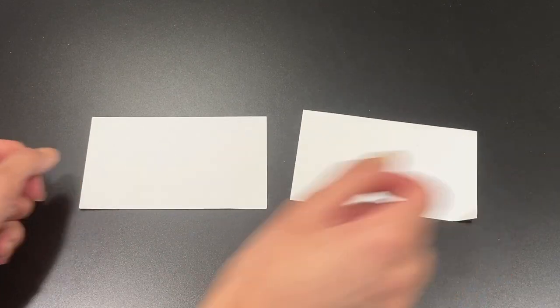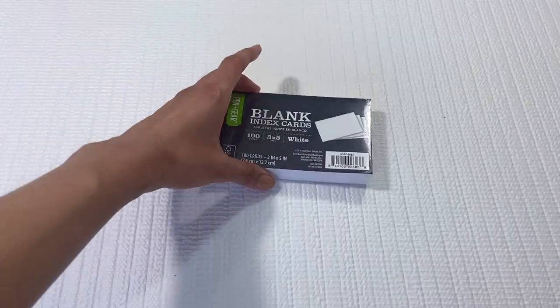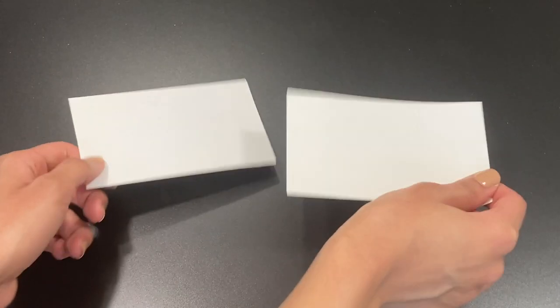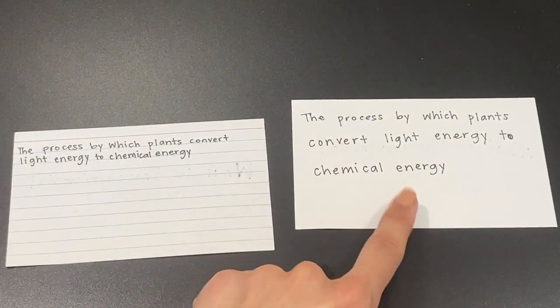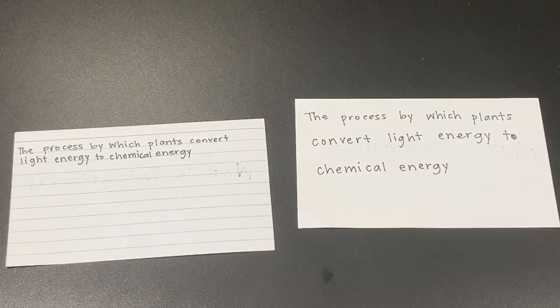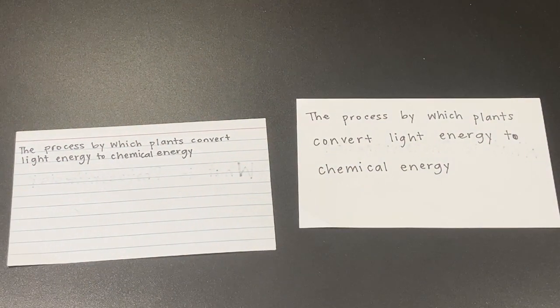Tip number two: instead of using ruled flashcards, use blank flashcards. The lines on ruled flashcards are often very harsh, which can pose as a distraction from the information you're trying to learn. On the blank side, you can write your words really big, which will help you memorize the information better, whereas on the ruled side, if you write your words bigger, it would look messy and again pose as a distraction.